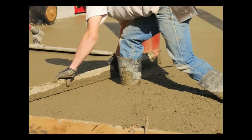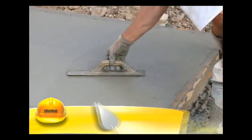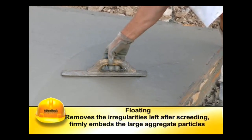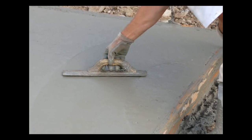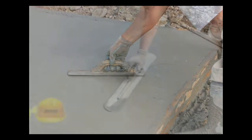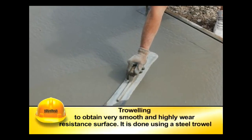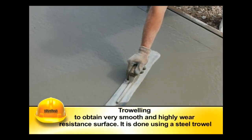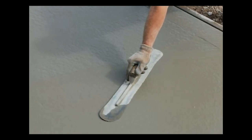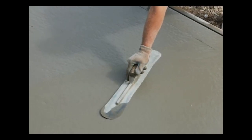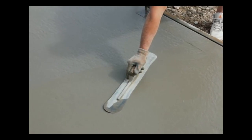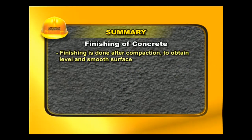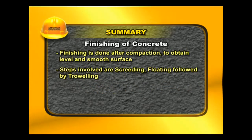Screeding removes bumps and hollows and gives a uniform, leveled surface. The next step is floating — it removes the irregularities left after screeding and firmly embeds the large aggregate particles. This is done using wooden floats moved forward and backward. The last step is troweling, done to obtain a very smooth and highly wear-resistant surface using a steel trowel. Troweling should not be done on a surface that has not been floated. Spreading of dry cement on wet surfaces should be avoided as it causes weaker surfaces, cracks, and blisters.